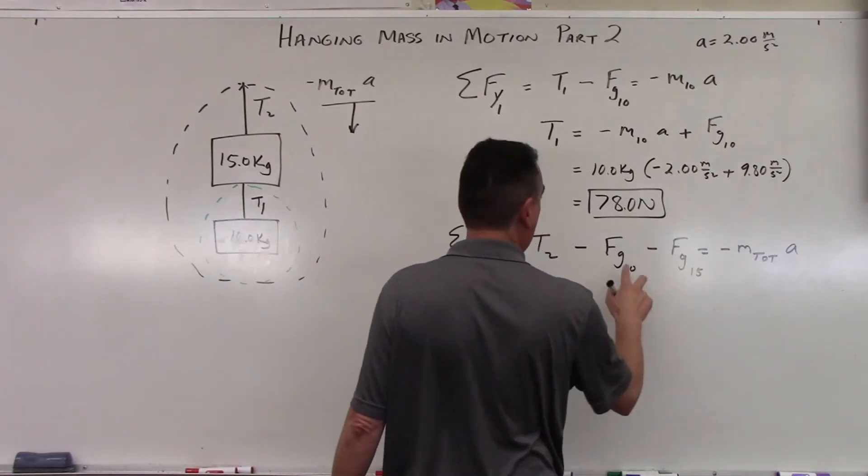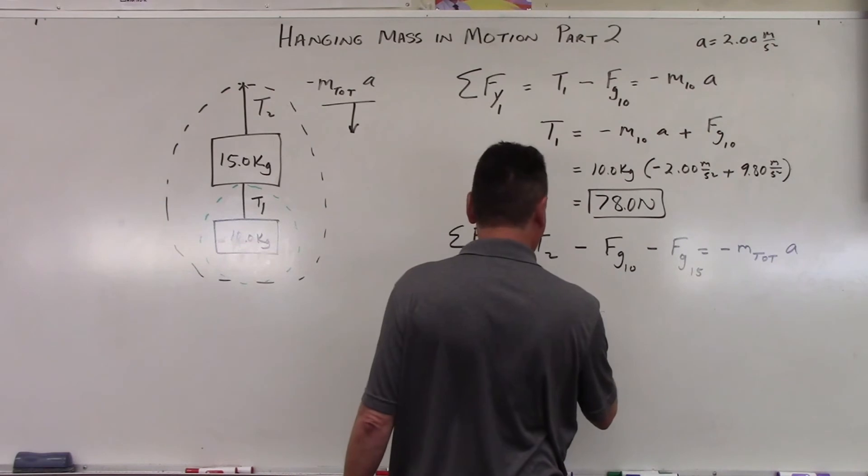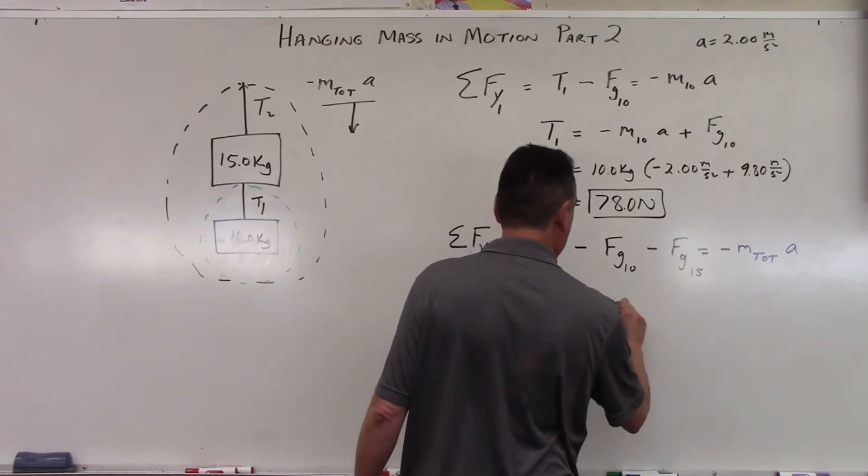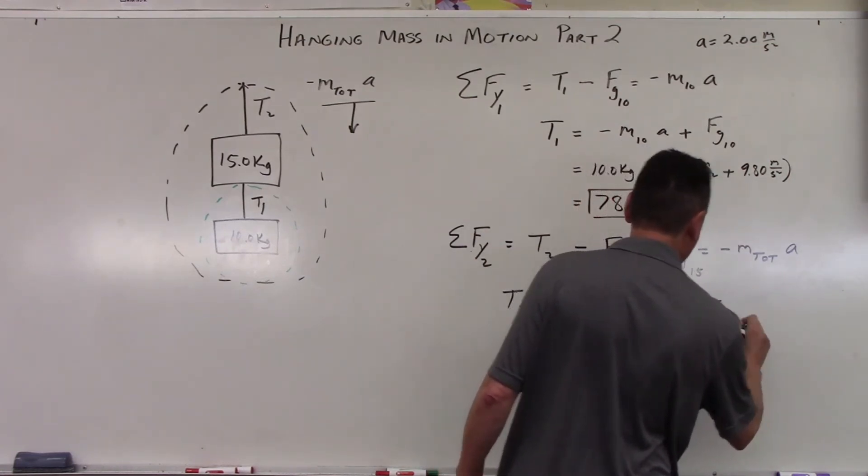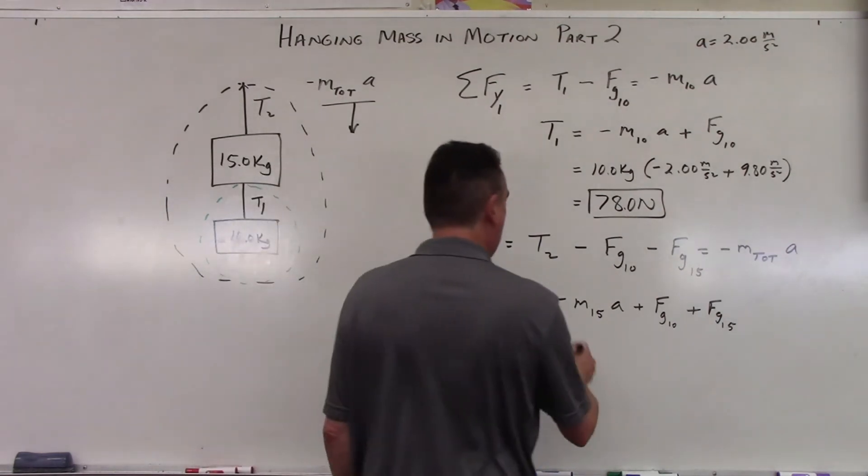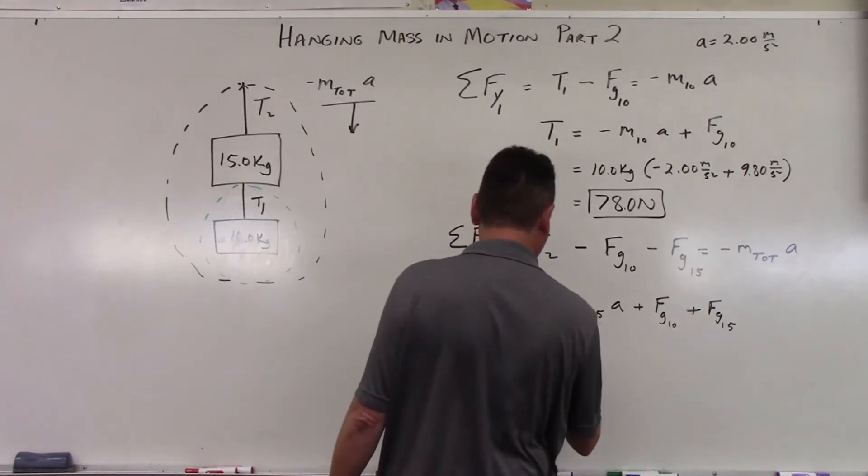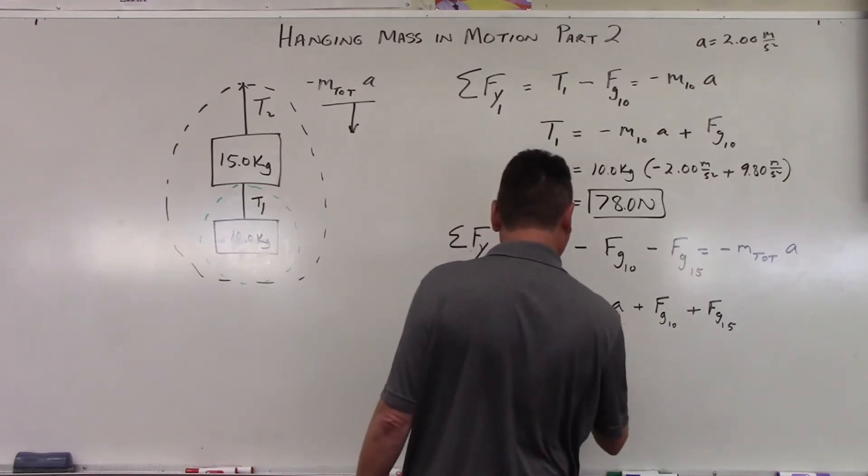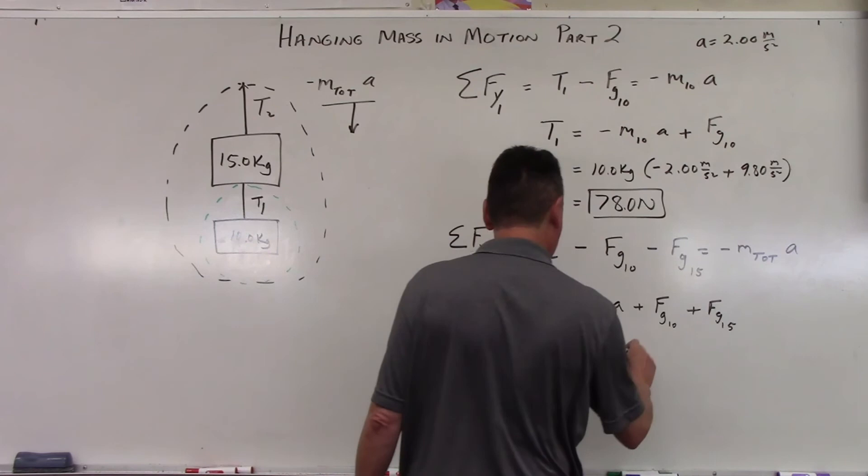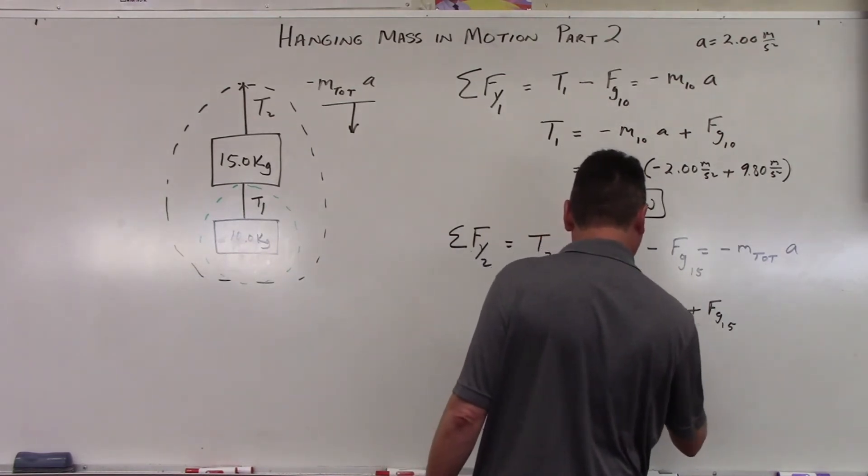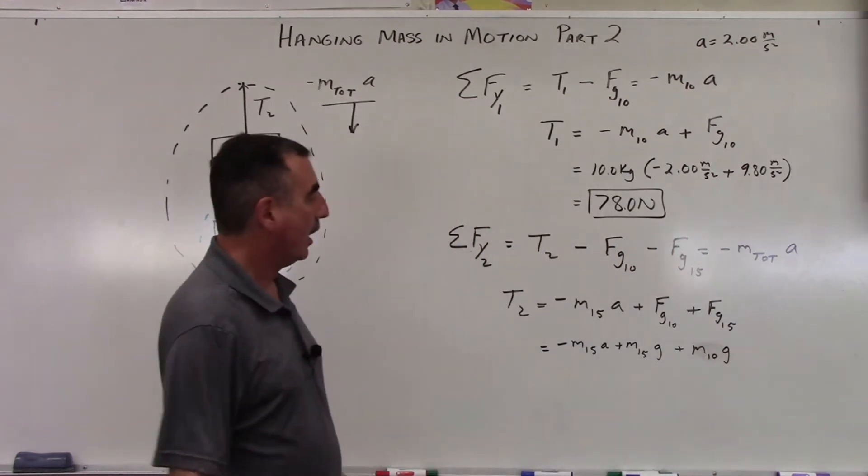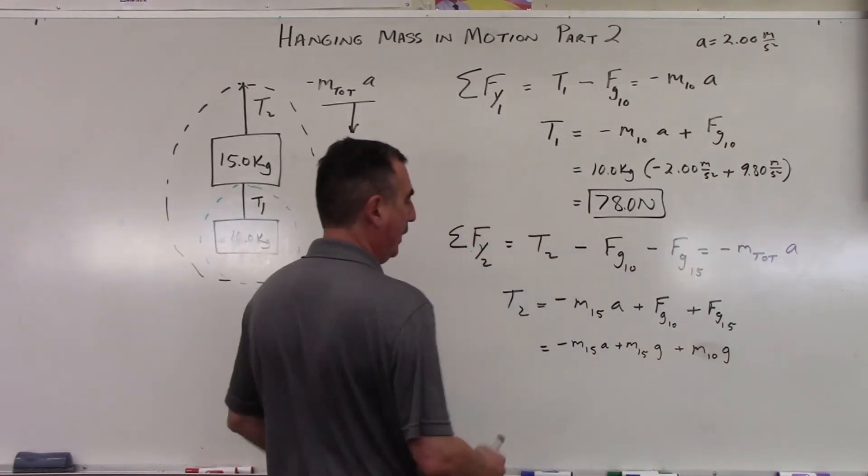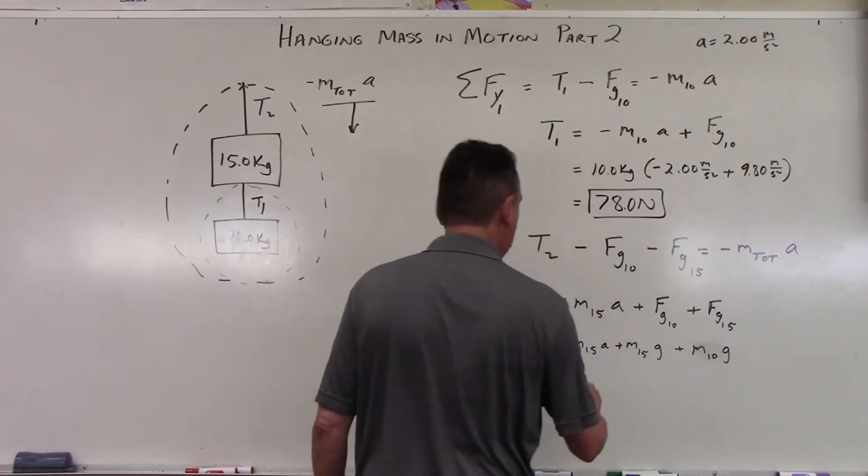And that's going to be equal to the negative of the total mass of both times the acceleration. So algebra wise, T2. I'm going to add these two to both sides. So this is going to be minus F sub 15 A plus F G 10 plus F G sub 15. And now I could bring these two together for factoring. So 15 A plus M 15 G plus M 10 G.